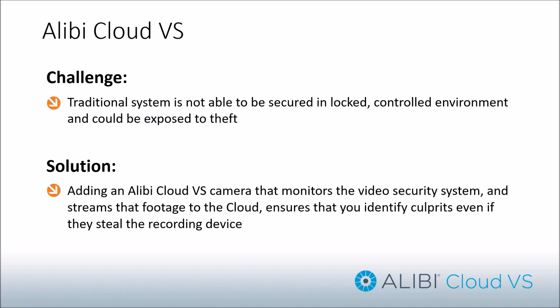A small business may want to put that recorder on their desk and use the local interface. You can actually have a cloud camera looking at that recorder. So if someone robs the location, finds and takes the recorder, damages it, or an employee accidentally unplugs it, the cloud solution is going to have that video stored in the cloud. Even though that local hard drive is tampered with or cameras are unplugged, you still have footage of what took place and no one can tamper with that evidence because it is not on-site.